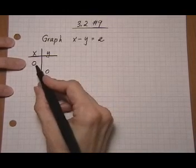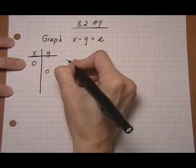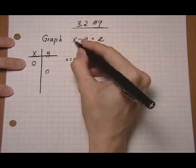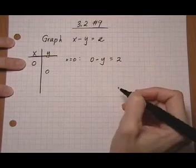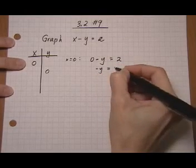So first of all, x is zero. If x is zero, the equation becomes zero take away y equals two, which is the same as negative y equals two.